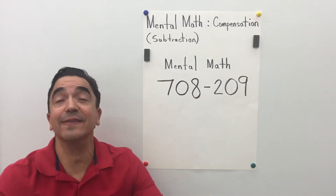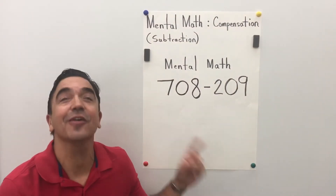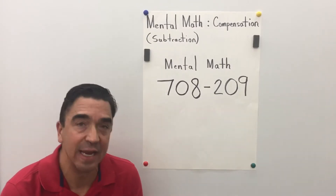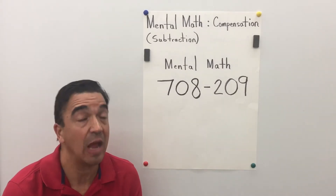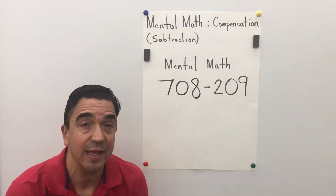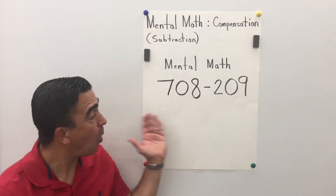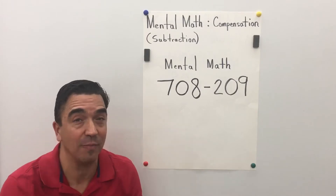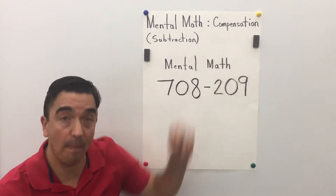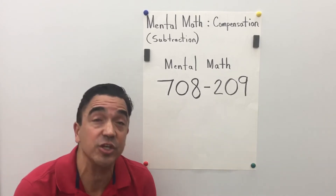Hi there, Coach Mike here. Today we are going to solve this horizontal multi-digit subtraction problem: 708 minus 209. When a lot of people solve this problem, they take the 708 and put it above the 209 and solve it vertically. Not us. We are going to solve it horizontally using mental math. I like to use a mental math strategy called compensation — a mental math strategy for multi-digit subtraction.